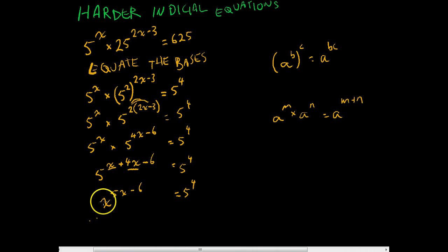Okay, and this is where it all comes together. Therefore, if 5 to the power of 5x minus 6 equals 5 to the power of 4, that means that 5x minus 6 equals 4.